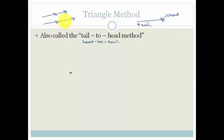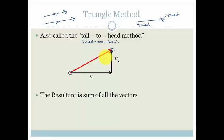Let's have a proper example. That would be one vector, and there would be another vector. You'll notice there is the tail and there is the head — that is the tail-to-head method. To get our resultant, your resultant is always going to be tail-to-tail and head-to-head when we are using this method. The resultant is the sum of all the vectors — it's the vector value of the two vectors taken together.